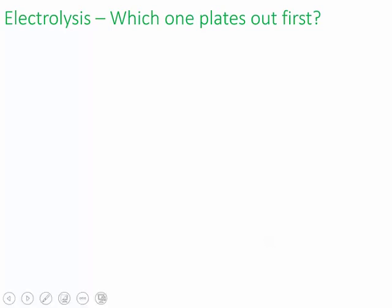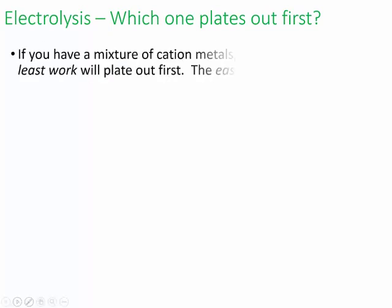In this video, we'll be going over the second part of electrolysis. If you have a mixture of cations in a solution or even if it's molten, and a current is applied, you can predict which metal is going to plate out as a solid first.